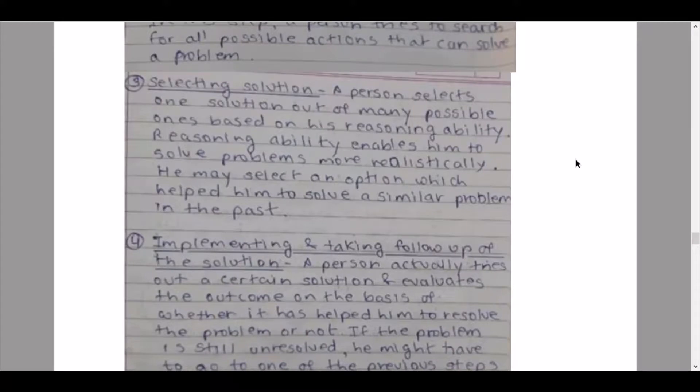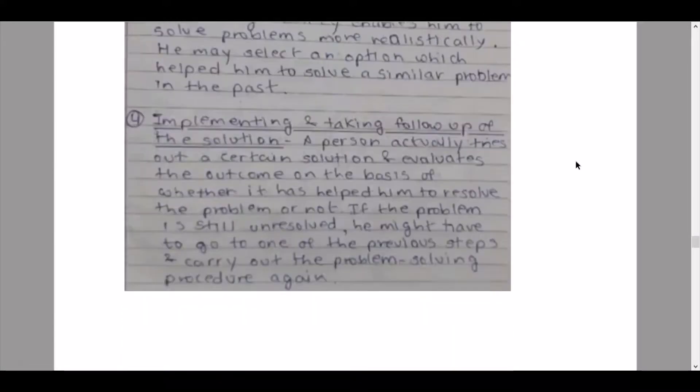The third one, selecting solution: a person selects one solution out of many possible ones based on his reasoning ability. Reasoning ability enables him or her to solve problems more realistically. He or she may select an option which helped him or her to solve a similar problem in the past.